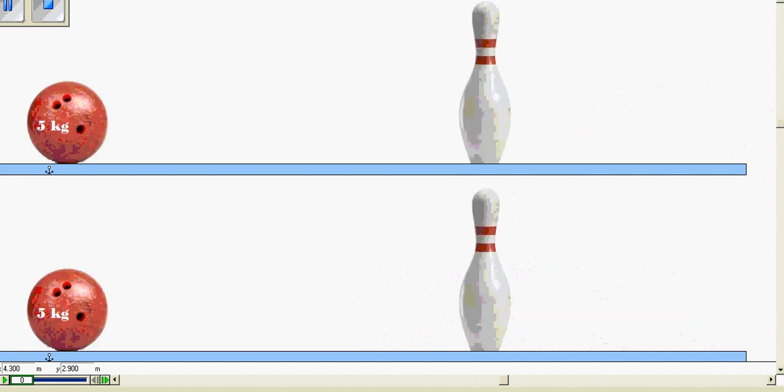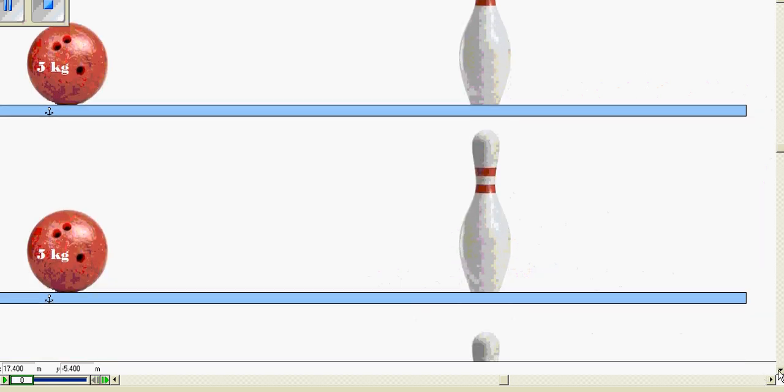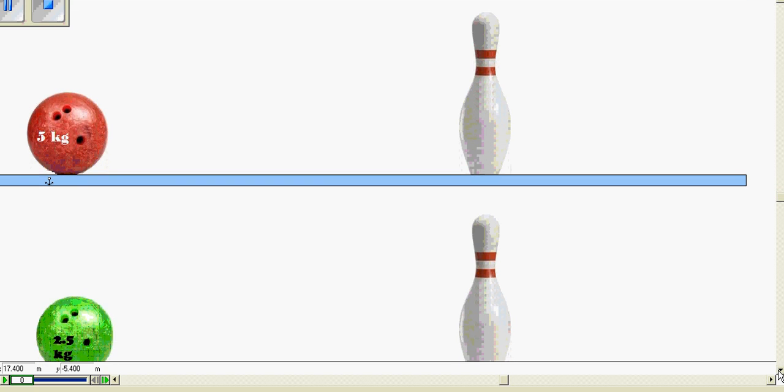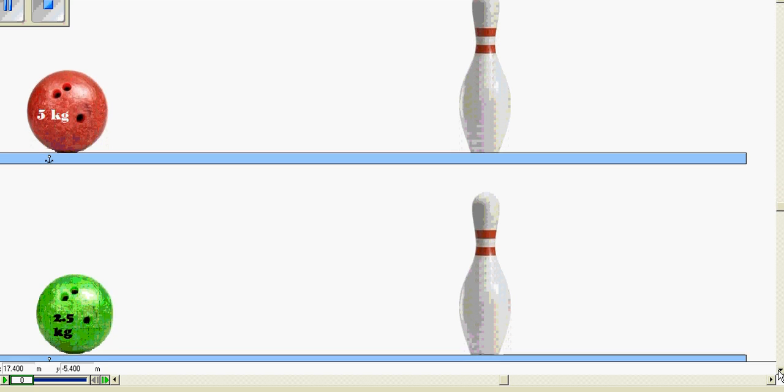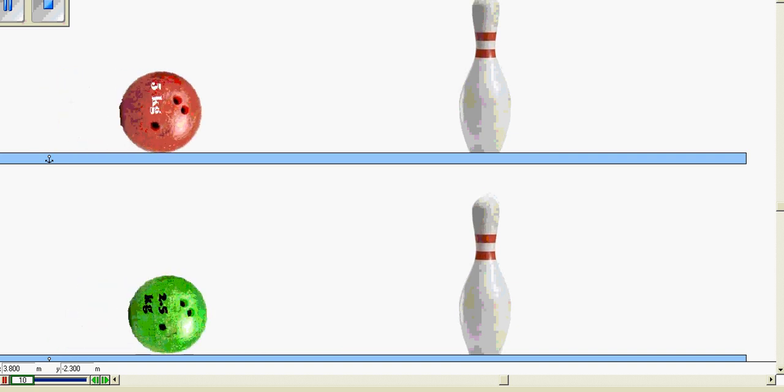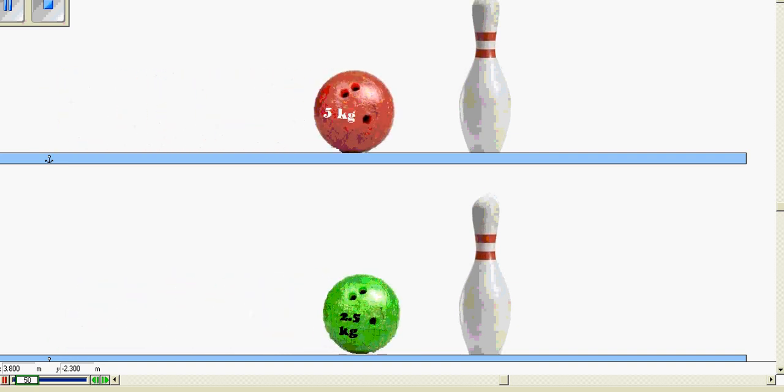Now, if we reset it and take a look at two different balls. The top ball here has five kilograms of mass. The bottom ball is only 2.5. So we'll expect that the bottom ball does not do as much work as the top ball does.